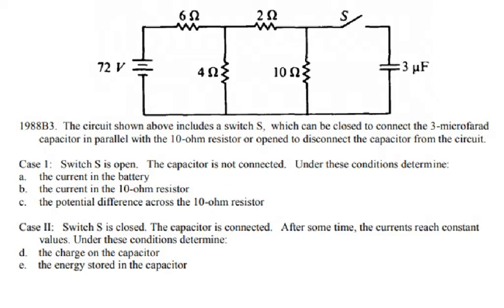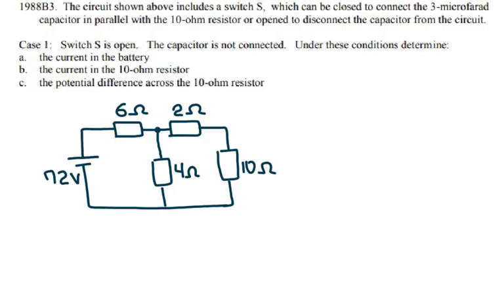There are two cases. In case one, switch S is open and the capacitor is not connected. Under these conditions, we need to determine the maximum current through the battery, the current in the 10 ohm resistor, and the potential difference across the 10 ohm resistor. With the switch open and capacitor disconnected, the circuit has no capacitor at all.